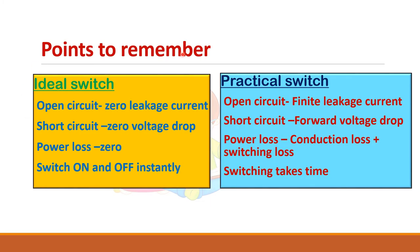To summarize, for an ideal switch: in the open circuit case you will have zero leakage current, whereas there will be finite leakage current in a practical switch. In the short circuit case, there is zero voltage drop ideally but a forward voltage drop practically. Power loss is zero ideally but there will be losses in a practical switch. The ideal switch turns on and off instantly, but it takes time in a practical switch.